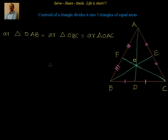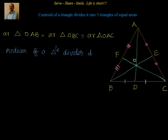For this, what is the logic we are going to use? We know that the centroid is the point of intersection of medians, and also we know that a median divides a triangle into two equal parts. We will leverage this concept to prove that all three triangle areas are equal.